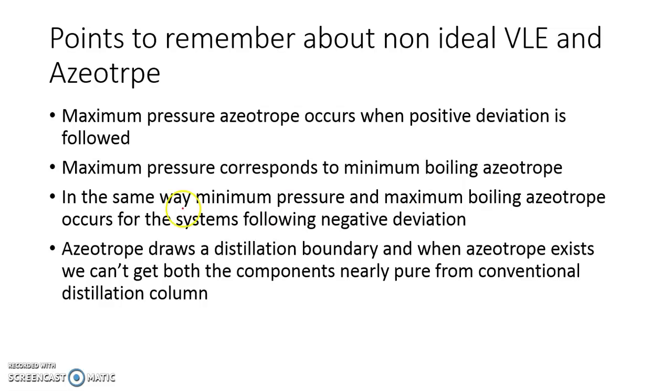An azeotrope draws a distillation boundary. When an azeotrope exists, we can't get both components really pure from a conventional distillation column. We can do it with the help of some other technology.